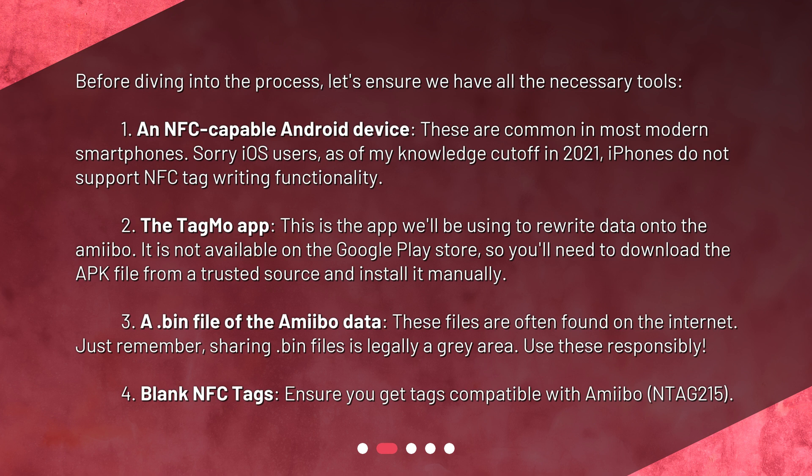Second, the Tagmo app. This is the app we'll be using to rewrite data onto the amiibo. It is not available on the Google Play Store, so you'll need to download the APK file from a trusted source and install it manually. Third, a .bin file of the amiibo data. These files are often found on the internet — just remember, sharing .bin files is legally a gray area.